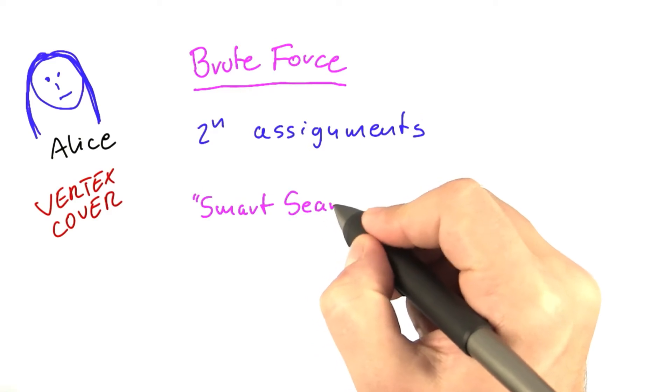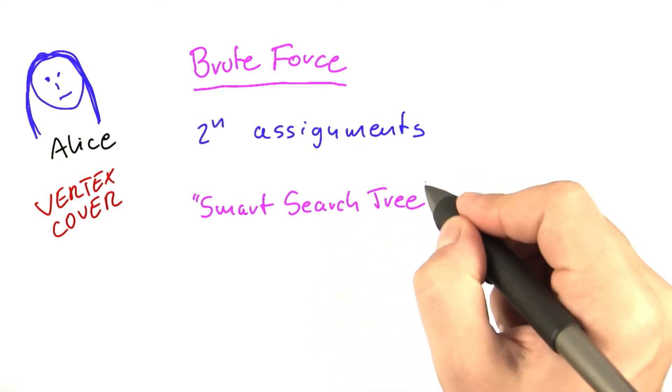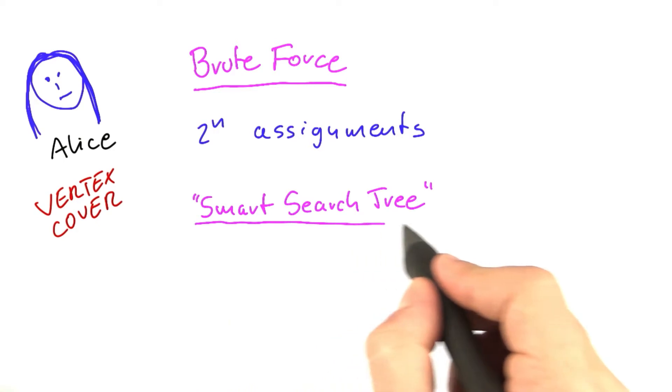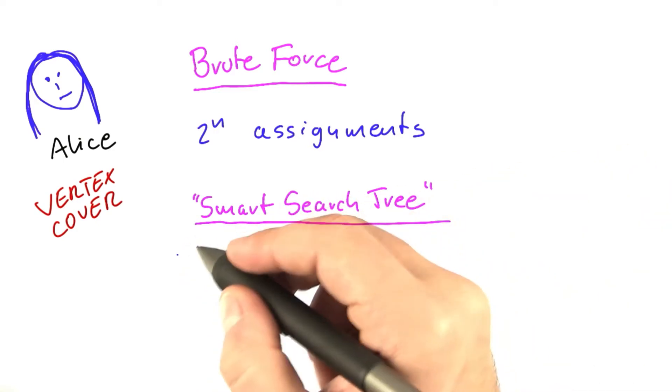Now let's look at our smart search tree or intelligent search tree and see how that is structured. And we're going to do a worst case analysis here.